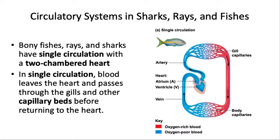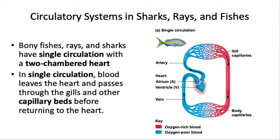Focusing on vertebrates with closed circulatory systems: chondrichthyes and ray-finned fishes have only a two-chambered heart — one atrium that receives blood and one ventricle that pumps it — called single circulation because blood travels one direction through both gill and body capillaries before returning to the heart.